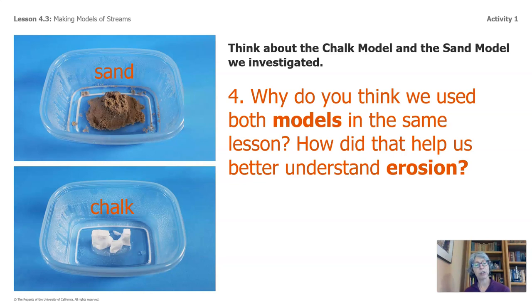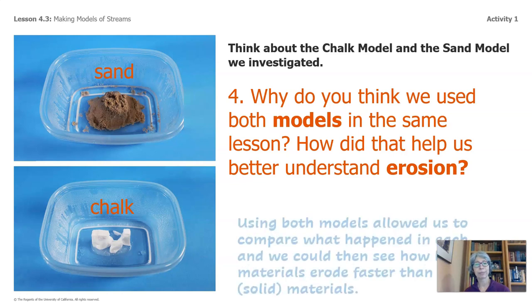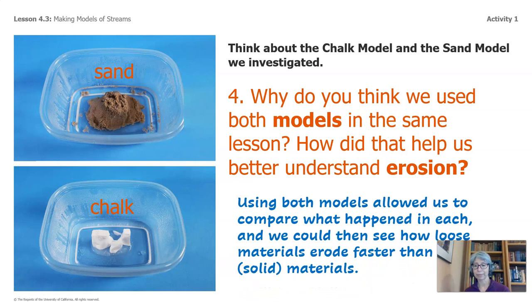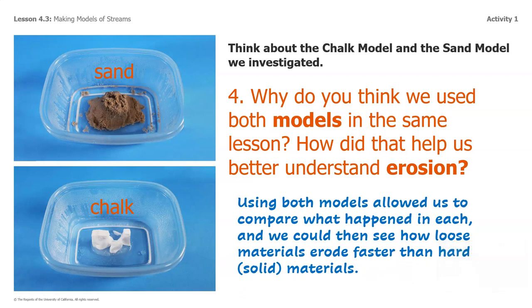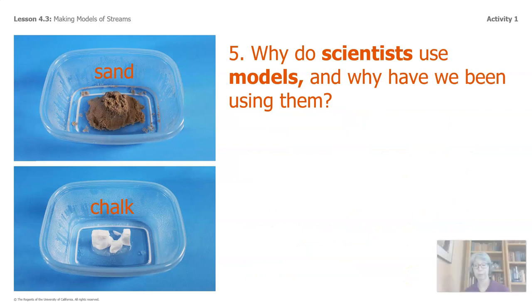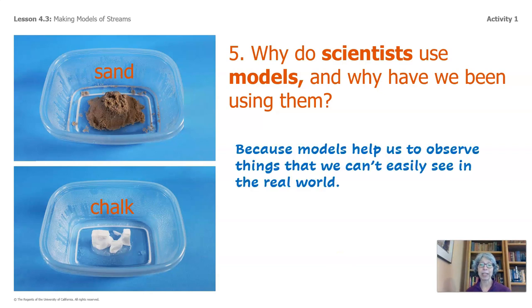These are questions that you can jot down your answers to in the packet — just pause the video. Using both models allowed us to compare what happened in each. We could then see how loose materials erode faster than hard or solid materials. Why do scientists use models, and why have we been using them? Because models help us observe things that we can't really easily see in the real world.